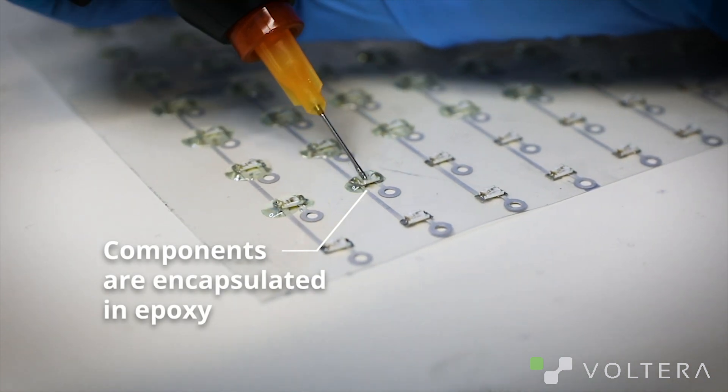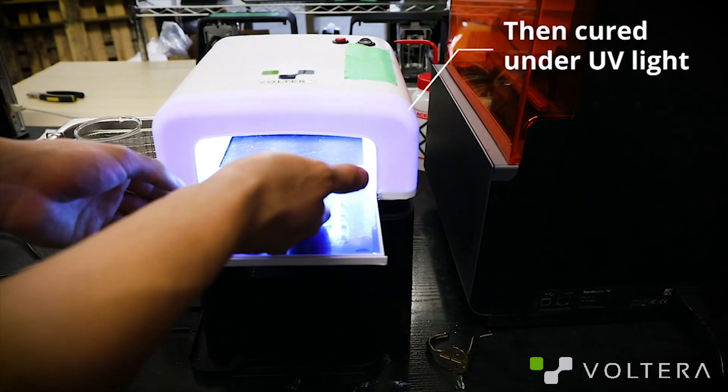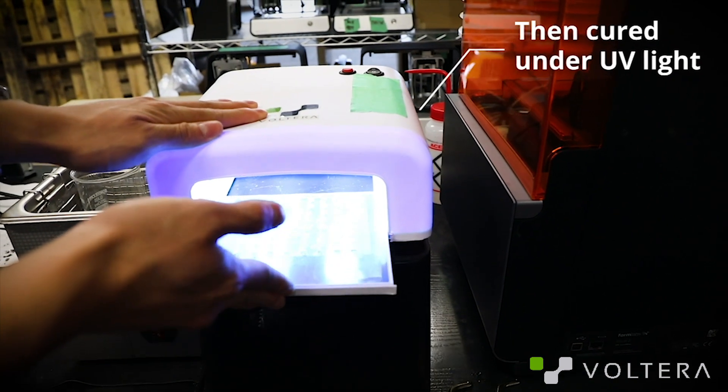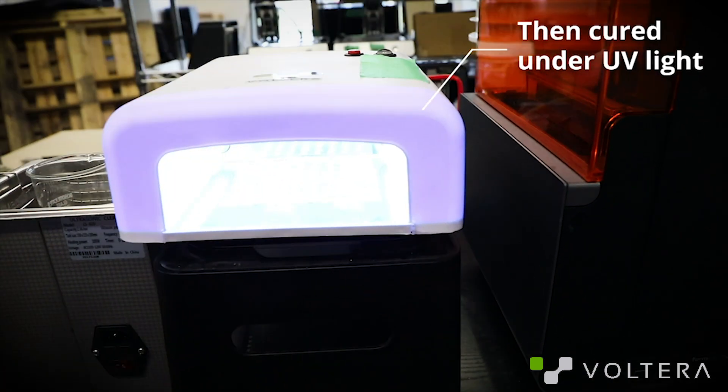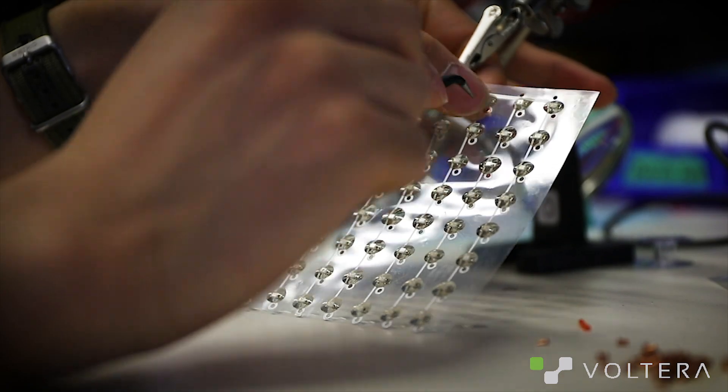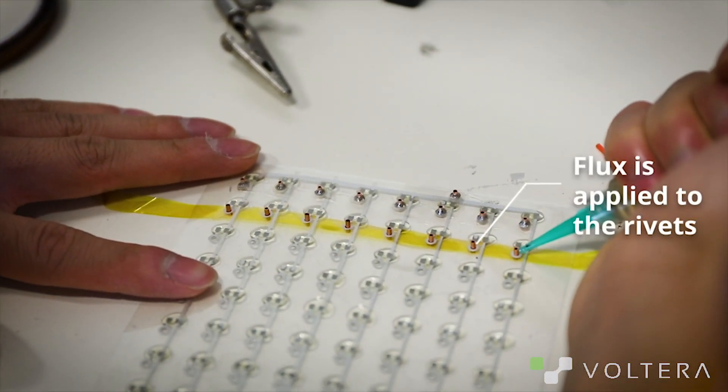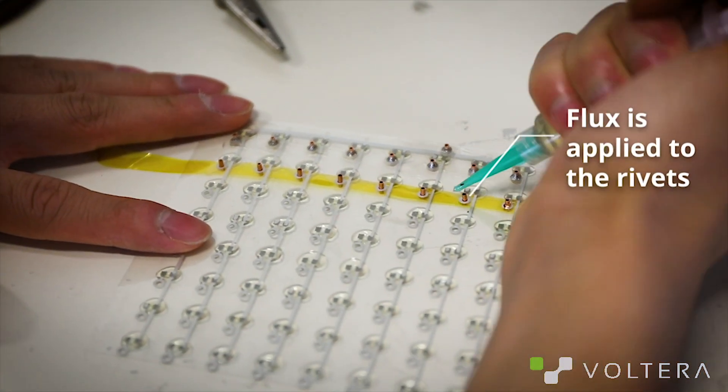With Flex, there are loads of applications. One of the biggest ones is doing RFID or NFC tags. Normally you'd have to buy the antennas yourself from some third-party supplier and work around their constraints, but with the V1 you can print your own antennas to whatever spec you want.